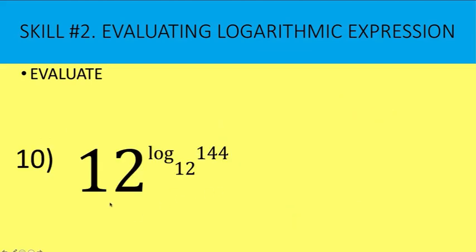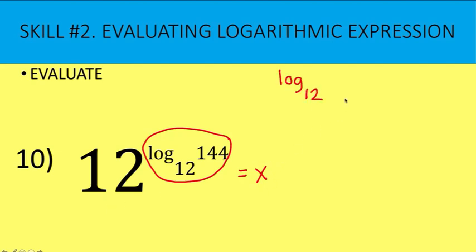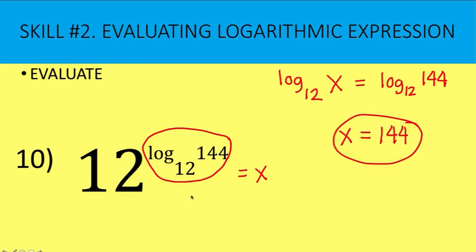What is the value of 12 raised to the logarithm to the base 12 of 144? Since we do not know the value, let it equal x. This is an exponential form where the base is 12 and the exponent is the entire expression log to the base 12 of 144. Writing in logarithmic form: log to the base 12 of x equals log to the base 12 of 144. Since the bases are the same, x must equal 144. So this entire expression equals 144.